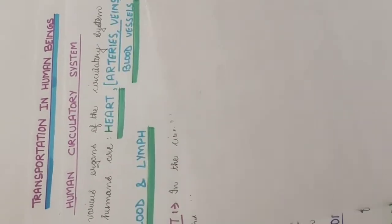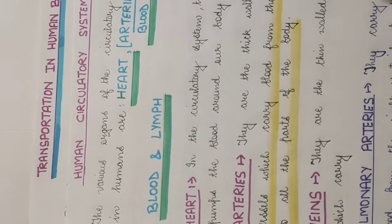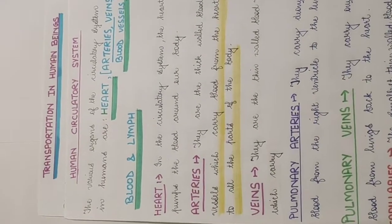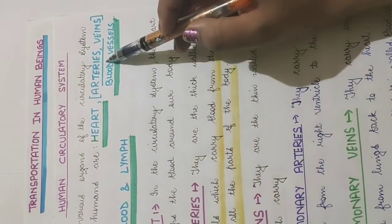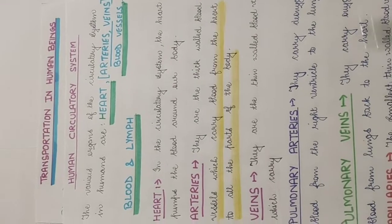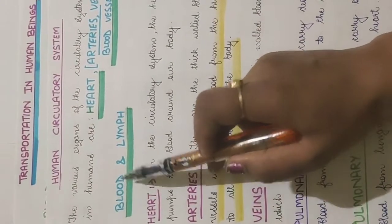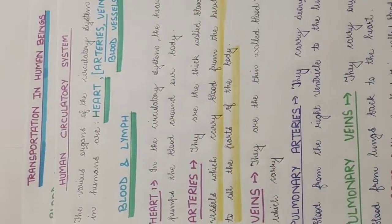The mechanism of all this process we are going to learn in this lecture. The human circulatory system comprises the heart, arteries, and veins — together called blood vessels — and obviously blood. So blood, heart, and blood vessels are the main components, and blood vessels are of two types: arteries and veins.